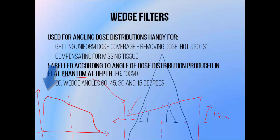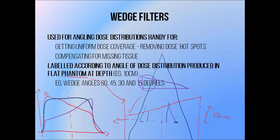But if we put a wedge filter in the way, it will attenuate the beam more on the shallower side and reduce the dose. This can be used to balance out the effects of the angled surface and produce a flat dose distribution. Textbooks will often call this compensating for missing tissue — they just mean the part that stops the surface from being flat.